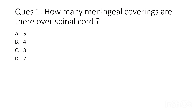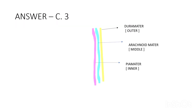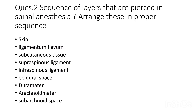First question: how many meningeal coverings are there outside the spinal cord? Options are five, four, three, or two. The correct answer is C — three. There are three meningeal coverings: first is dura mater (outer), second is arachnoid mater (middle), and last is pia mater (inner lining).